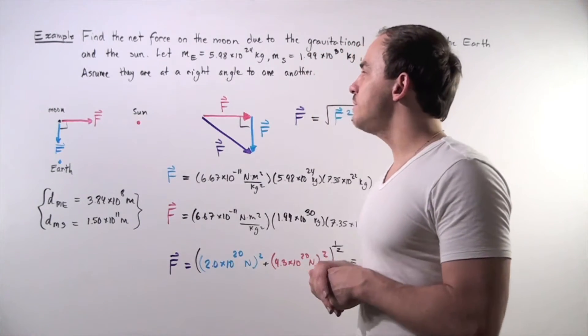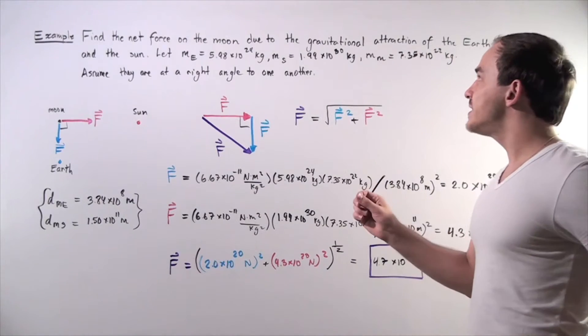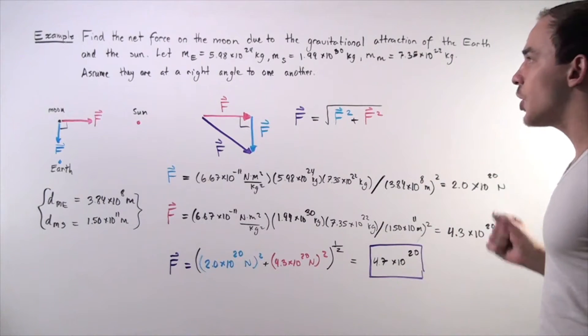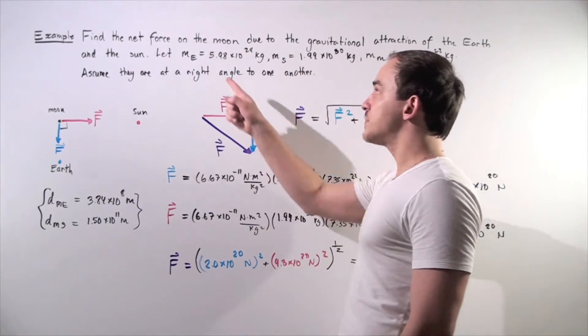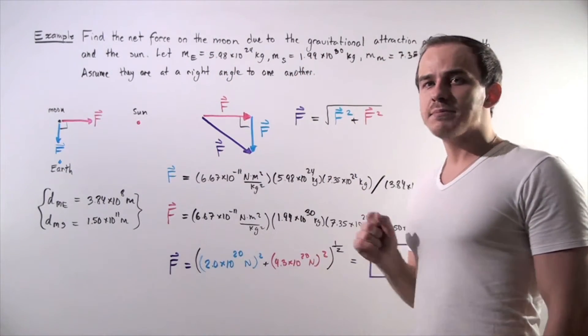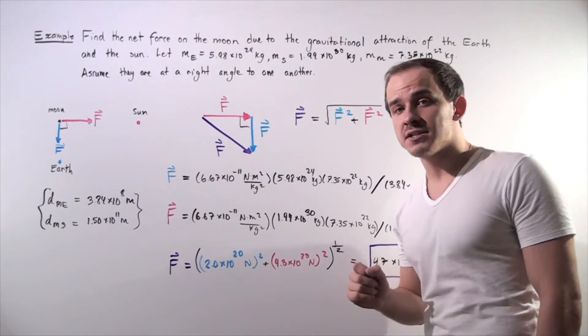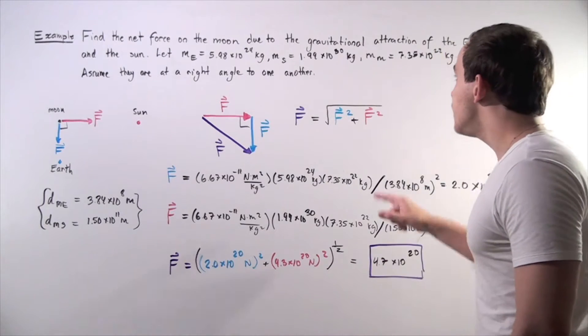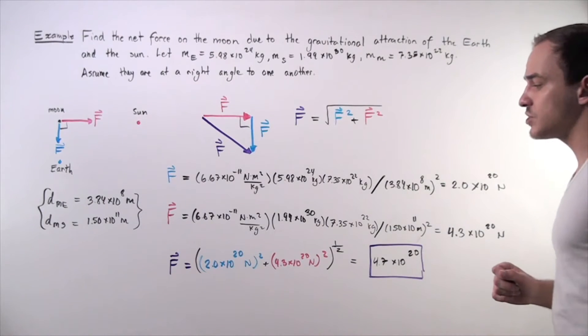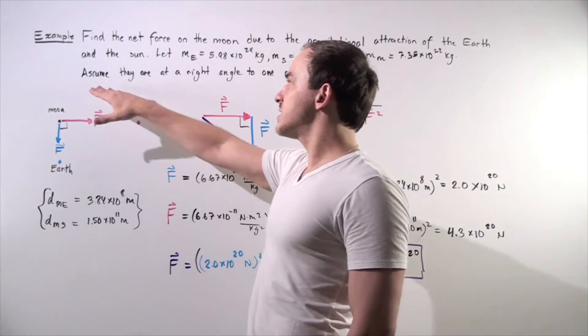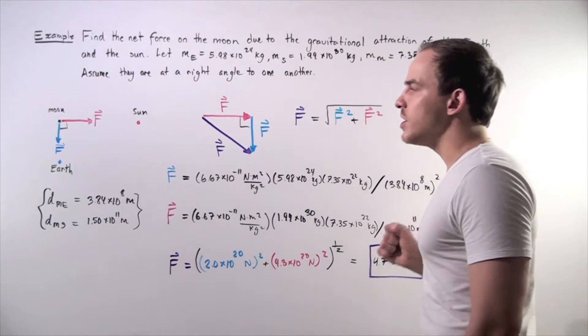Let's suppose that we want to find the net force on the Moon due to the gravitational attraction of the Earth as well as the Sun. Let's suppose the mass of the Earth is 5.98 times 10 to the 24 kilograms, the mass of the Sun is 1.99 times 10 to the 30 kilograms, and the mass of the Moon is 7.35 times 10 to the 22 kilograms. We're also making the assumption that these objects are at a 90 degree angle to one another.